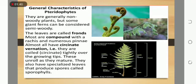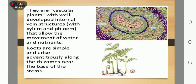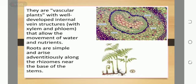They also have specialized leaves that produce spore cells. They are vascular plants with well-developed internal vascular structures with xylem and phloem that allow the movement of water and nutrients.